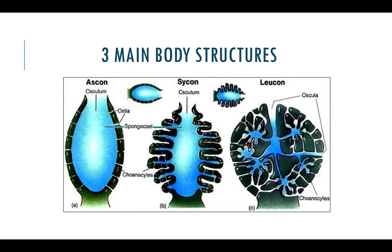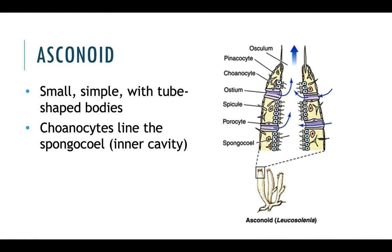There are three main body types you're going to need to know — these will be practical questions. Starting with the most simple, which is asconoid. An asconoid sponge is very simple, has the choanocytes on the inside lining the spongocoel, that's the inner cavity. It usually only has one osculum or exit point with many ostia or entry points. The singular for ostia would be an osteum.